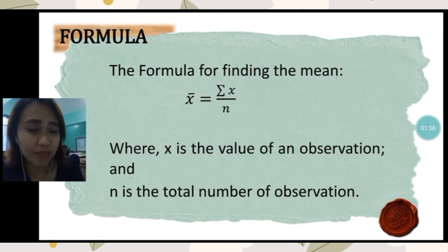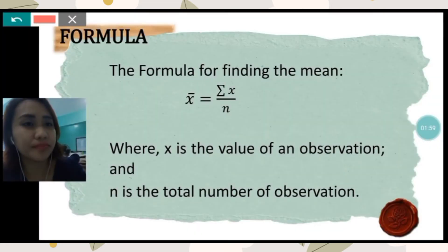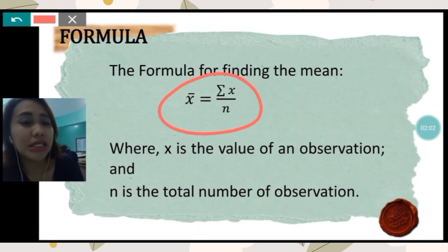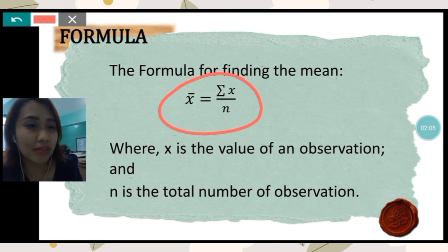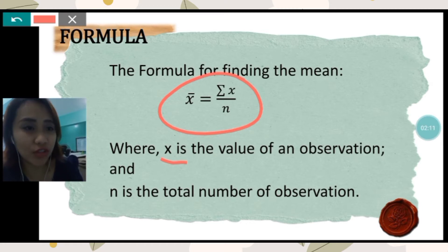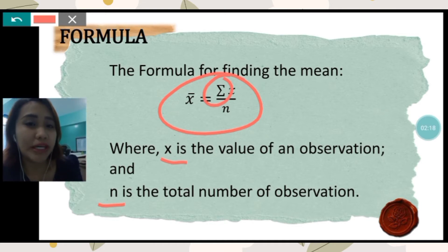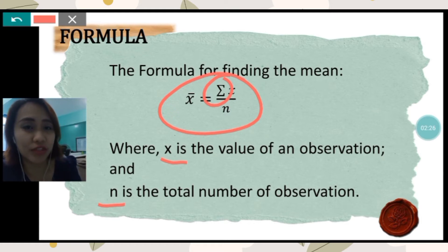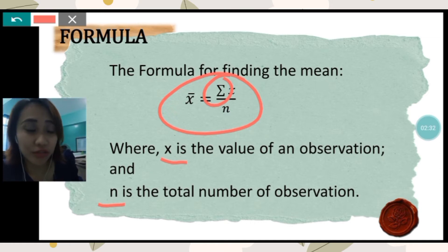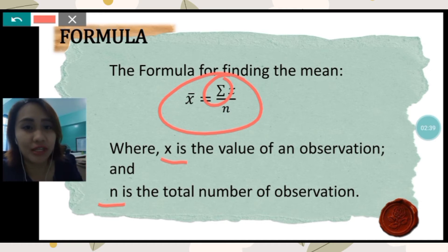We have here the formula to find the mean: x-bar is equal to the summation of all x over n. Here, x is the value of an observation and n is the total number of observations. The summation symbol means you have to add all the data given. After adding all the values, you divide by the total number of observations — it's simply like getting the average: add all the numbers, then divide by how many numbers there are in the given data set.